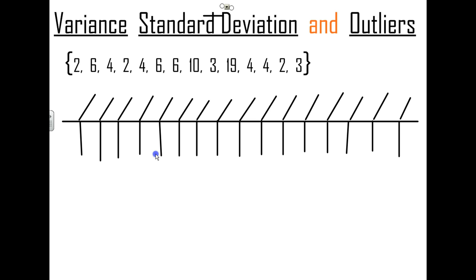Outliers — we talked a little bit about that. An outlier is something like 1 through 10 and then 100; 100 would be an outlier. It's something that's way far away from the average. So what we're going to do is calculate the average and see how spread out all these numbers are.